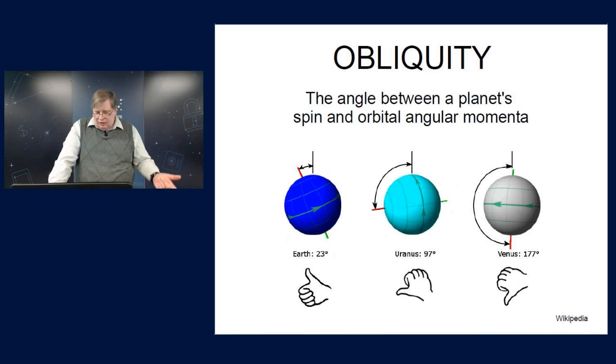So, tides decay planets' rotation rate as well as its obliquity, but not necessarily all down to synchronous rotation or down to zero obliquity. There are many ways in which it can hang up, especially if a planet's orbit is eccentric. And the details of that process depend on the model you use for tidal dissipation.